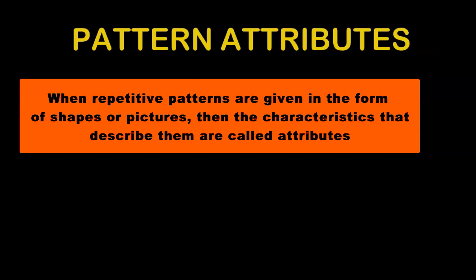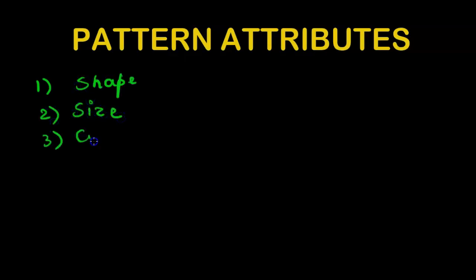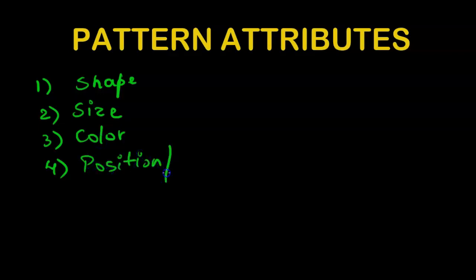In this video we will discuss what are pattern attributes. When patterns are given in the form of shapes or pictures, they can be described by changing characteristics — those changing characteristics are called attributes. There are different types of attributes we can see in a pattern: the first is shape, second is size, third is color, fourth is position (which can also be called direction), and fifth is number.